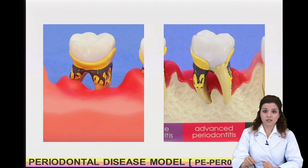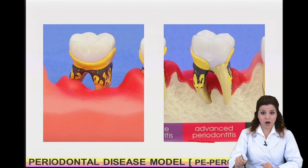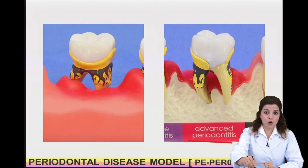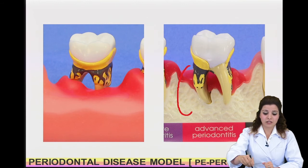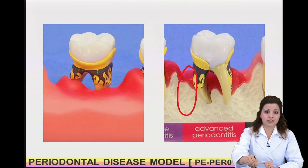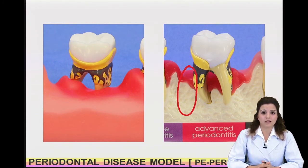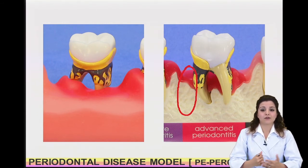When the periodontal disease progresses to the advanced stage, severe bone and gingival resorption would cause tooth mobility and consequently tooth loss.